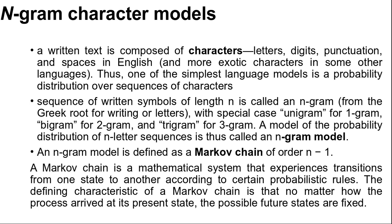In a Markov chain, the probability of character Ci depends only on the immediately preceding characters, not on any other characters. A Markov chain is a mathematical system that experiences transitions from one state to another according to certain probabilistic rules. The defining characteristic of a Markov chain is that no matter how the process arrived at its present state, the possible future states are fixed.